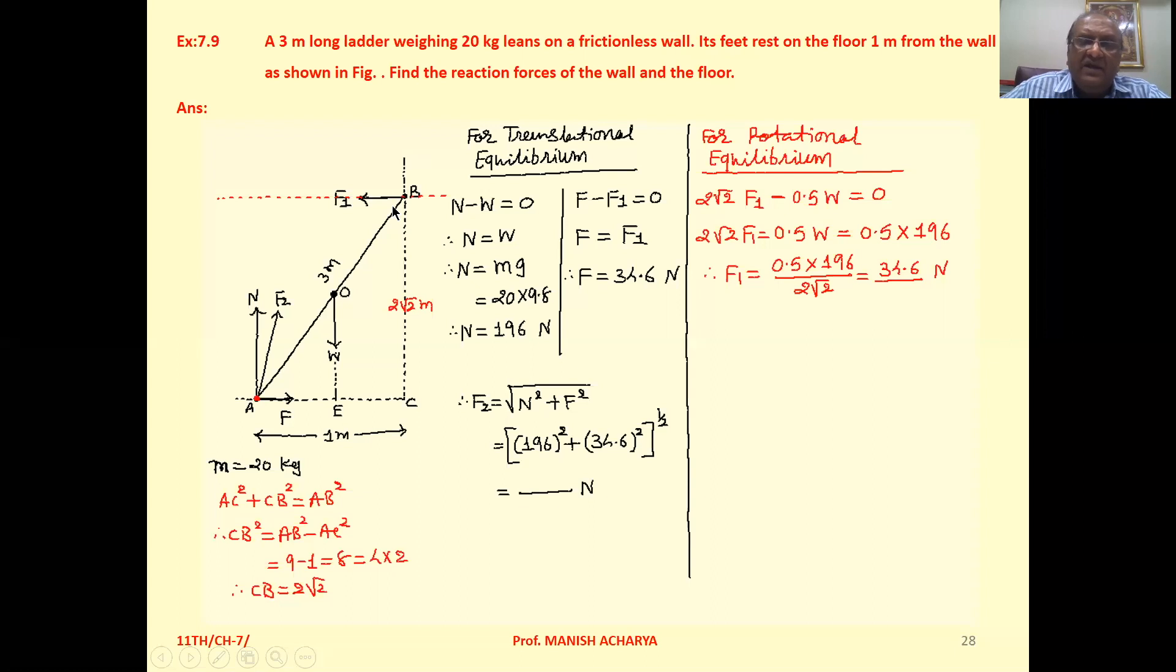Now the ladder is in equilibrium. So we can write for translational equilibrium, the horizontal and vertical forces are perfectly balanced. Here the vertical force is normal reaction upward, weight downward. So N minus W equal to 0. N equals W. But W is the weight of the ladder, mg. Mass of the ladder is given as 20, g is 9.8. You will get N.